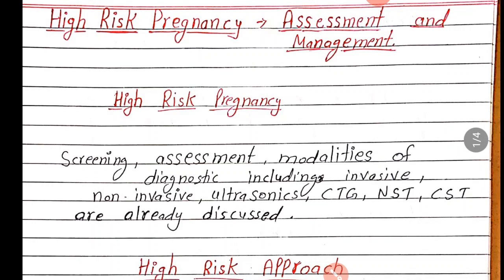High risk pregnancy kya hoti hai? High risk pregnancy mein pregnancy se related kuch complication ho sakti hai, jismein mother and baby ki health par negative impact dalti hai. Jo aise koi health problems hoti hai jo pre-pregnant ya pregnant dono stage mein agar ho to pregnancy and fetal health ke liye complicated ho sakti hai.